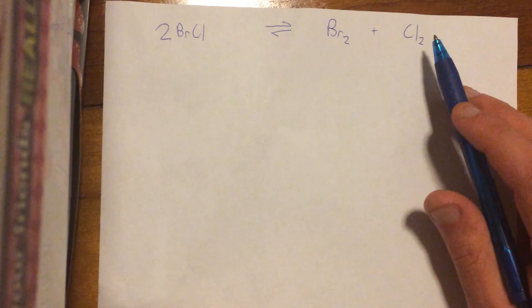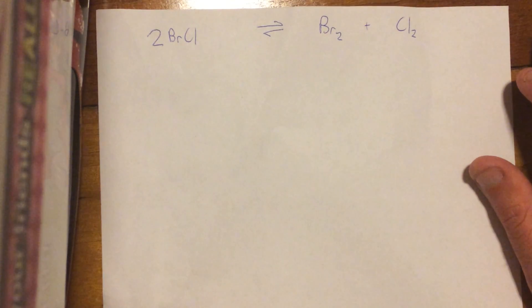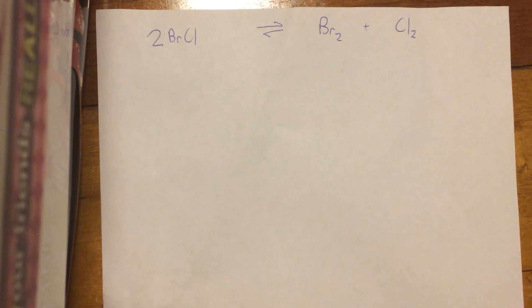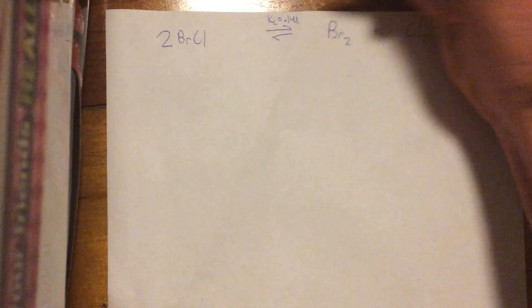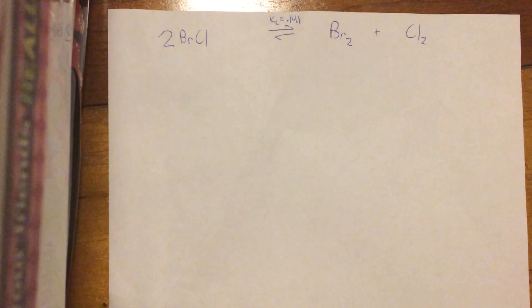So we start with this equation here, and I like to write that equation at the top. And then next, you just write the information that you're given. So in this case, they give us Kc equals 0.141. So I like to write that in the middle there, because that's the equilibrium constant.